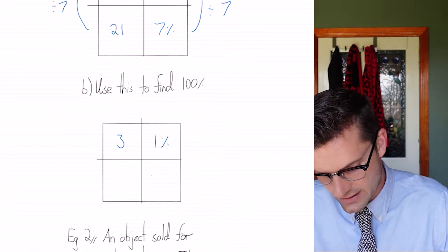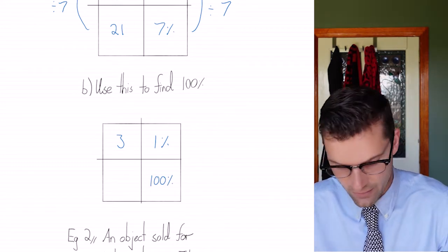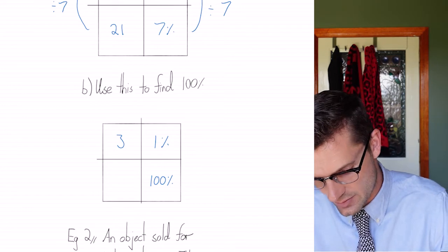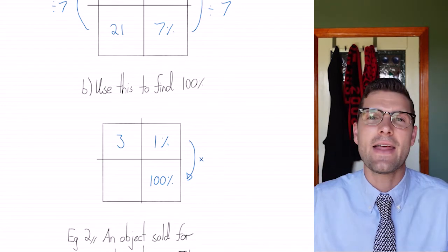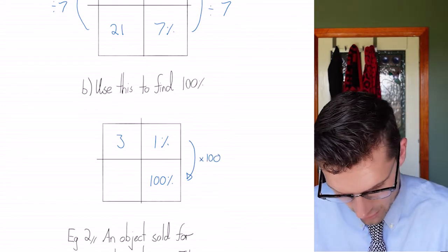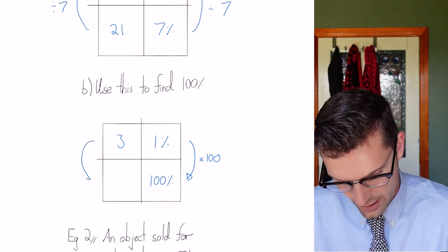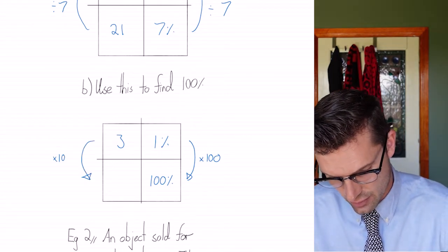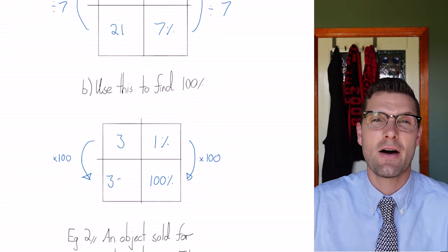So a hundred percent down here, I can get from one percent to a hundred percent very easily. I can times by a hundred, and that's what I've got to do to both sides. So three is multiplied by a hundred here, which is equal to three hundred. This is my final answer, and I'm done.